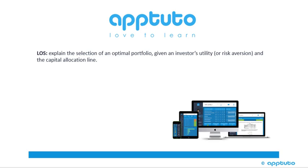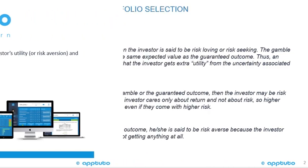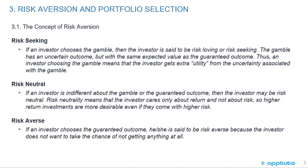This LOS explains the selection of an optimal portfolio given an investor's utility or risk aversion and the capital allocation line. Risk Aversion and Portfolio Selection – The Concept of Risk Aversion.